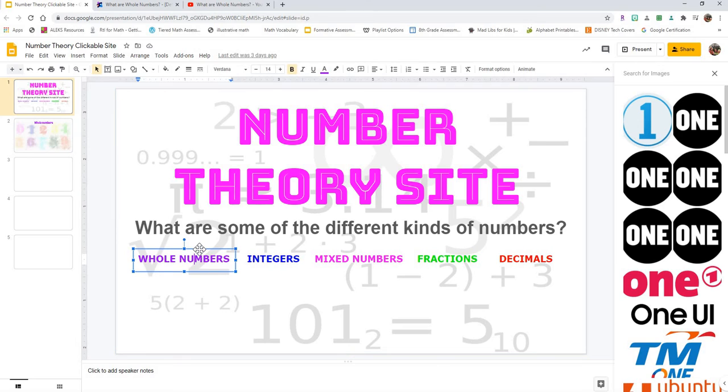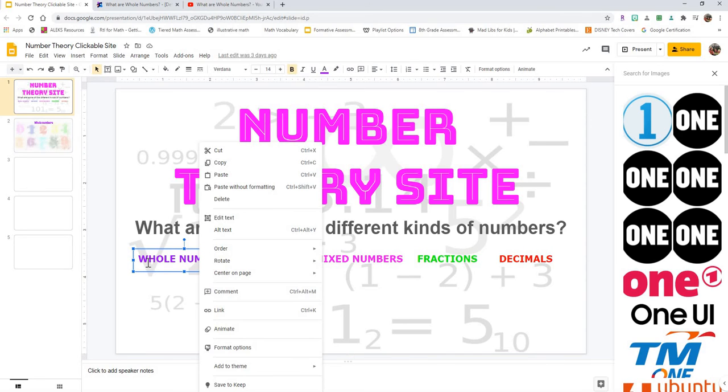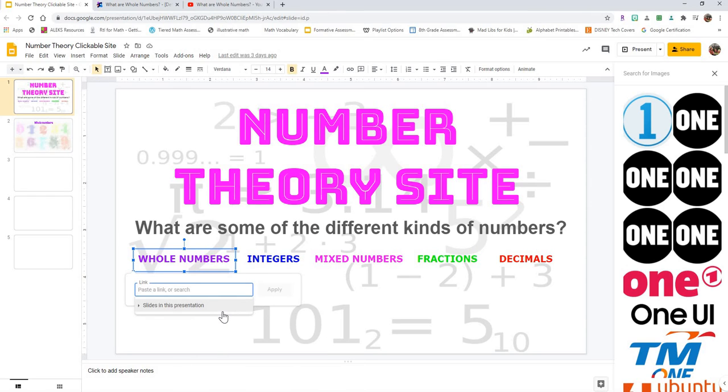I can also right click on it and I have to make sure, so see how it's highlighting the text box? Make sure that that's highlighted. I can also right click on it and click link.